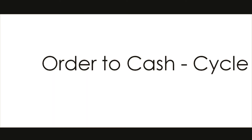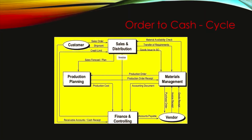Let us start with the order-to-cash cycle. In a typical business scenario, first we have a customer — number one — who will place an order. The order will be received by the SD department, the Sales and Distribution department, which is number two. The customer sends the order, the sales department receives it and creates a sales order in the SAP SD system. Say our company is manufacturing laptops and we receive an order for a few laptops.